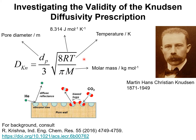In deriving the Knudsen formula, it is assumed that the gas molecule suffers diffuse reflectance. In other words, the angle of incidence bears no relation to the angle at which the gas molecule gets reflected after experiencing a collision with the pore wall.